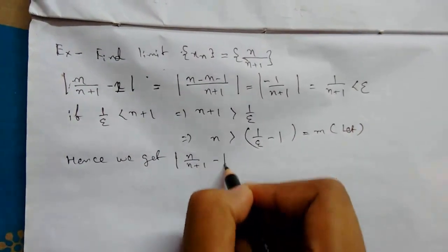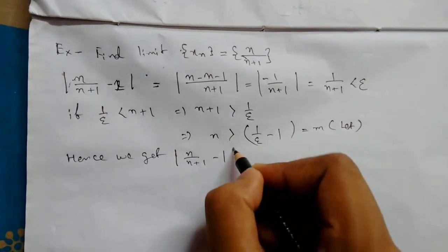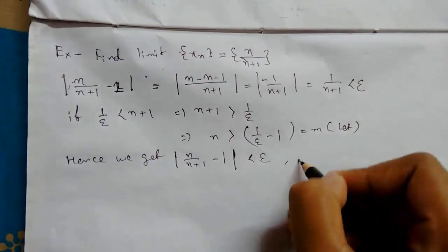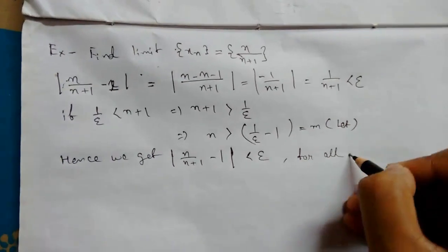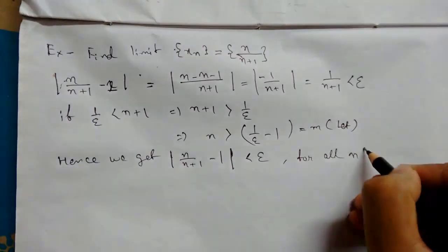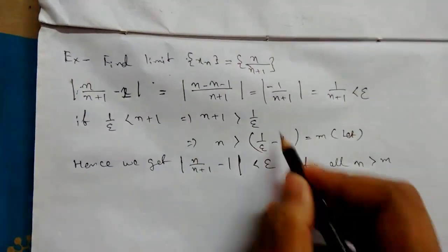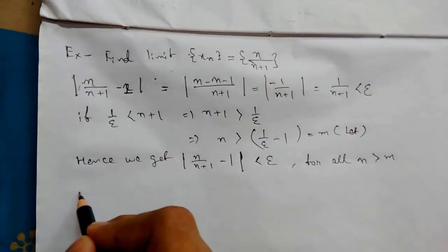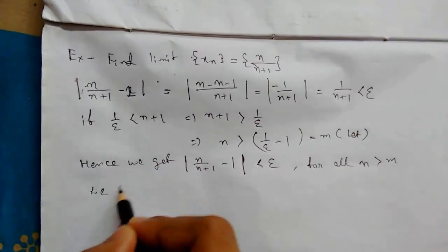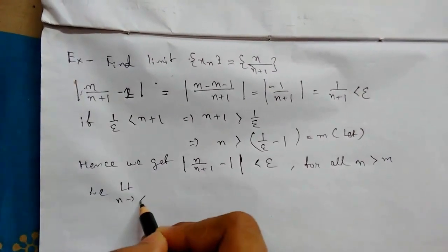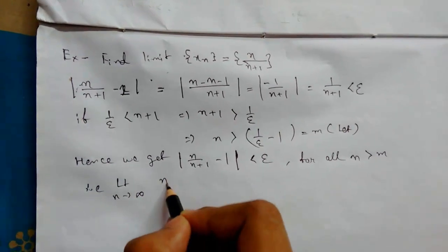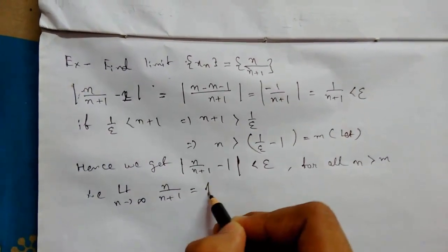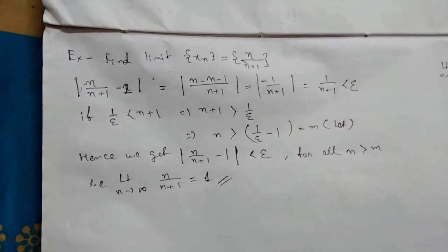Hence we get |n/(n+1) − 1| < ε for all n > M. You have to write all these steps. Therefore, the limit as n tends to infinity of n/(n+1) equals 1. This is our answer.